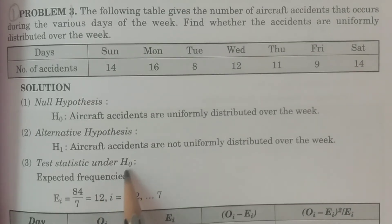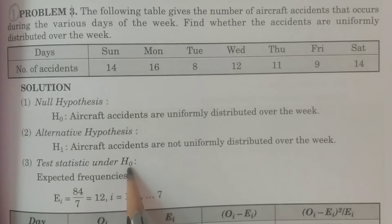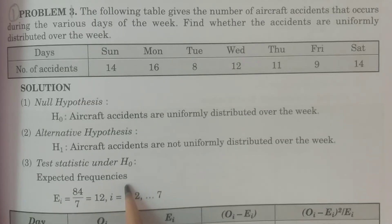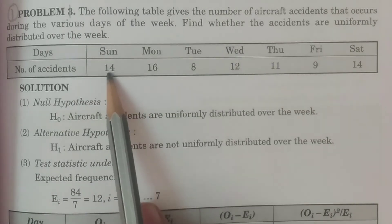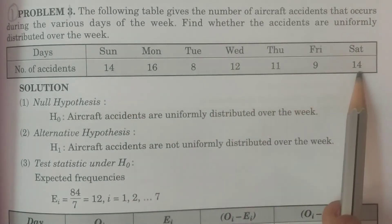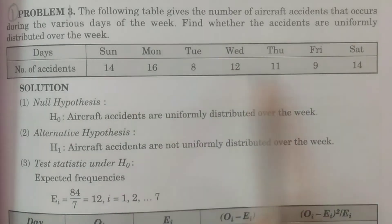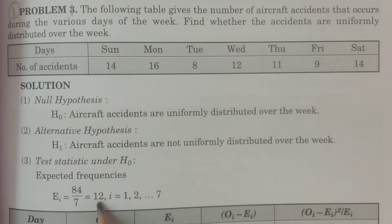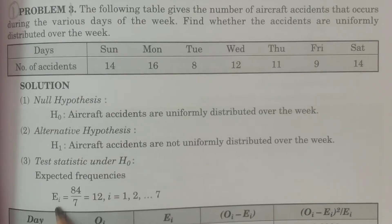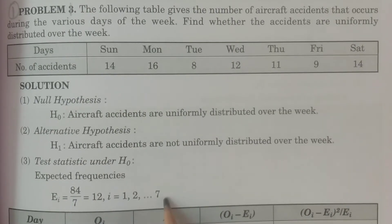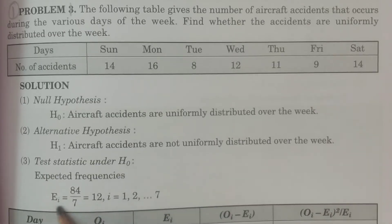And the test statistic under H0, if you consider the third point in which the expected frequencies are going to be calculated by taking the sum of these and divided by total days of the week of 7. So 84 divided by 7 is equal to 12. This is expected frequencies Ei. Ei is equal to 1, 2 and so on 7. That is for all i, the value of Ei is 12.